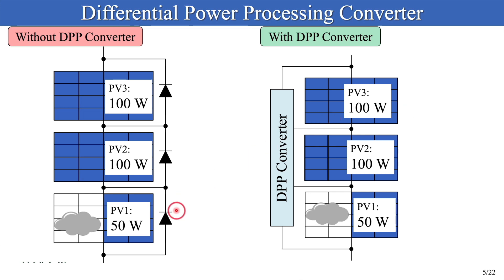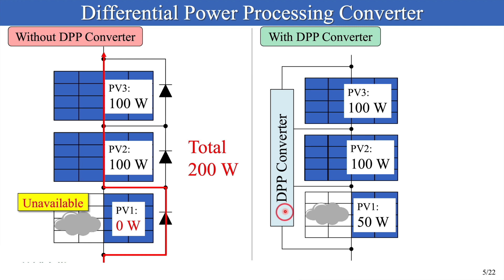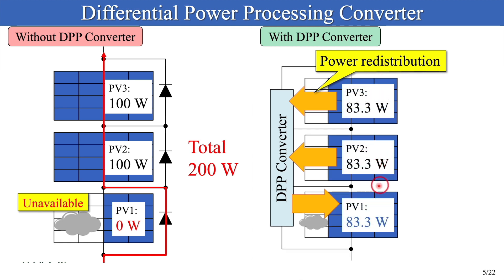For example, the shaded panel and unshaded panels can potentially produce 50W and 100W respectively. But since the shaded panel is bypassed, the output power of the string is just 200W, and this shaded panel's power is no longer extractable. Various kinds of differential power processing converters have been proposed as a powerful solution to partial shading issues. The DPP converter transfers a fraction of generated power from unshaded panels to shaded ones. Thanks to power redistribution, all panel characteristics become uniform, and the output power of the string can be enhanced as high as 250W.